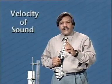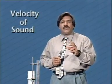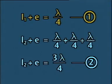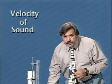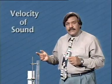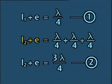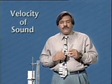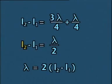The distance between a node and a consecutive anti-node equals λ/4. Therefore we have the equation: L1 + E = λ/4. Now we decrease the water level again and find another position where we get a loud sound, giving length L2 + E = 3λ/4. Subtracting the two equations: L2 − L1 = λ/2, or λ = 2(L2 − L1).